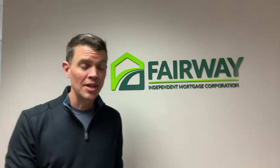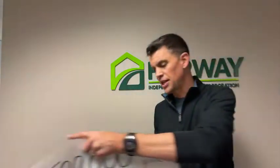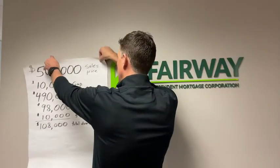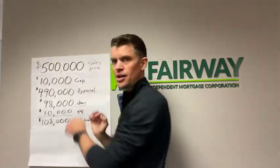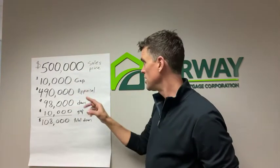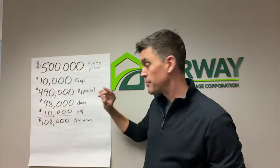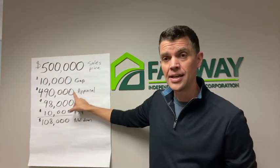Let's look at this example on my way-too-big sticky note here. I've got this sticky note that I'm going to put on the wall and we can look at these numbers more exactly together. On this example: $500,000 sales price home, the gap is $10,000. Again, that means that you're willing to accept an appraisal down to $490,000.